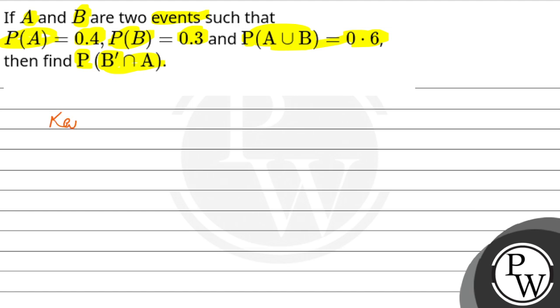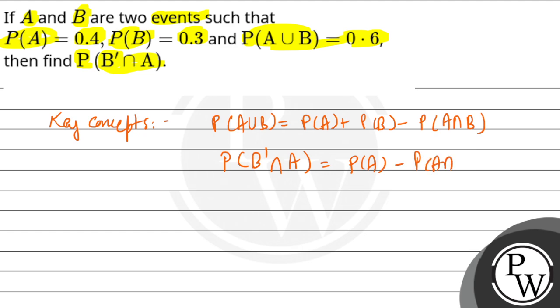So here the key concepts we're going to use are basically some formulas. P of A union B is defined as P of A plus P of B minus P of A intersection B. And the second one we're going to use is P of B dash intersection A will be P of A minus P of A intersection B.